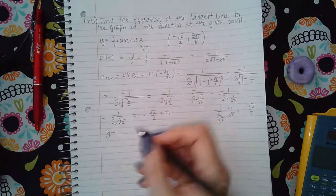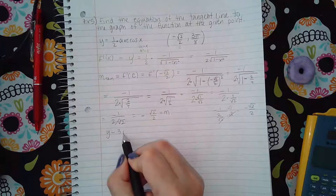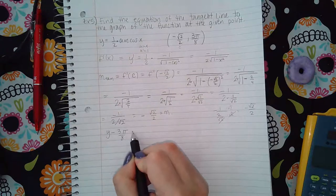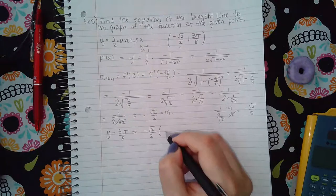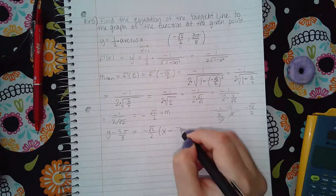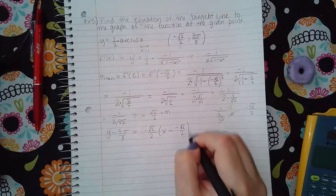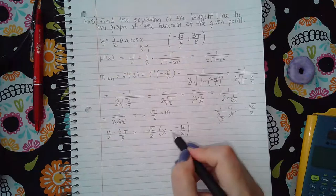Okay, so now we've got the slope. But I want the equation, so I need to do y minus the y value up there, which is three pi over eight, equal to m, which is this value, parentheses x minus the x value.